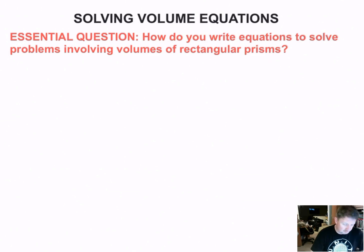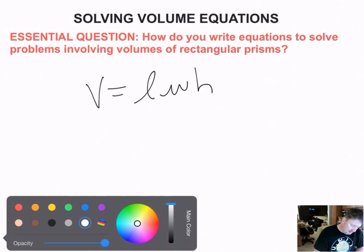We know what to do with volume because we learned that in the last video. If you remember correctly, volume for a rectangular prism is V equals length times width times height.